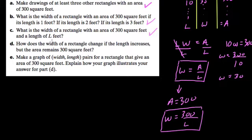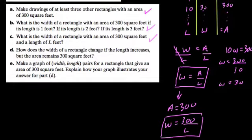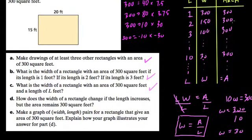Okay, so how does the width of a rectangle change if the length increases but the area remains constant at 300 feet? Well, we can look at our chart so far to make sense of that. Here the length is 1 and the width is 300. When we double the length, we half the width. If we triple the length, we divide the width by 3.